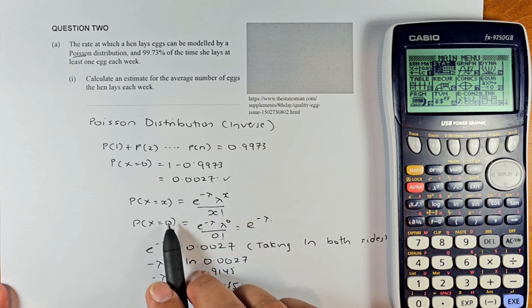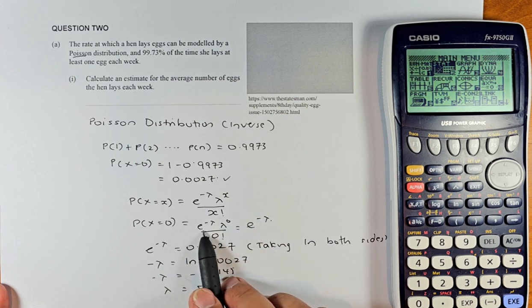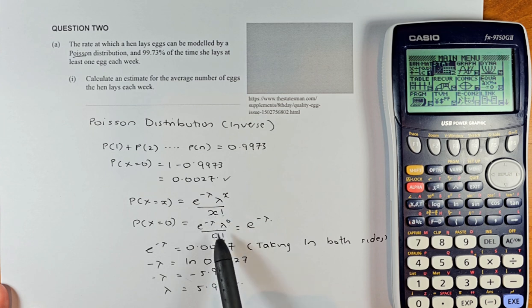So when X equal to 0, you substitute X equal to 0 in there. So e^(-λ) still stays, λ power 0, 0 factorial. Lambda power 0 is 1. 0 factorial is also 1 so we are left with e^(-λ).